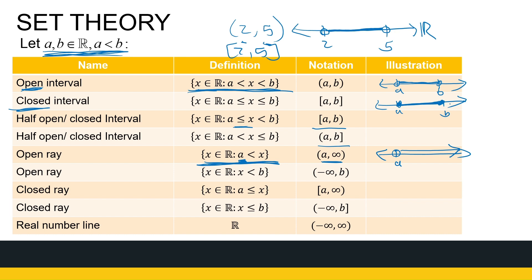A square bracket is where I have a point where I can stop. Similarly, if I have values less than a number B, the interval goes all the way from minus infinity to B. We can have B included or excluded, giving further variations.